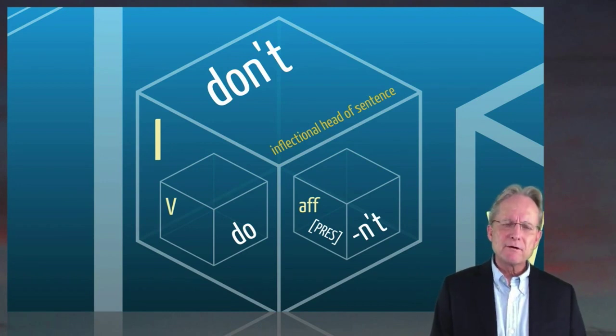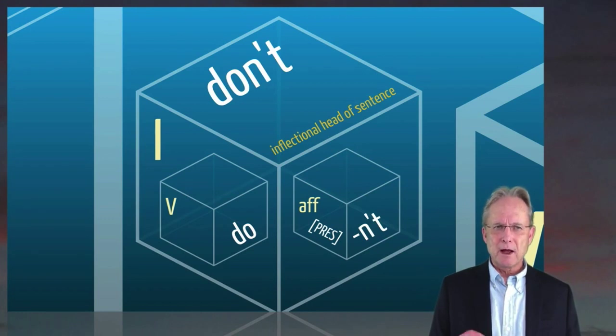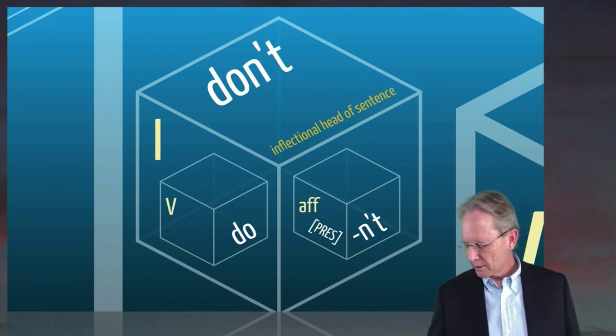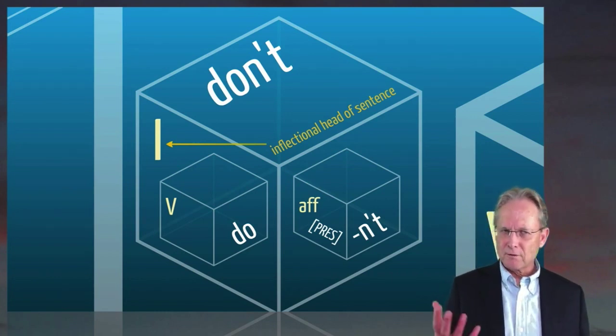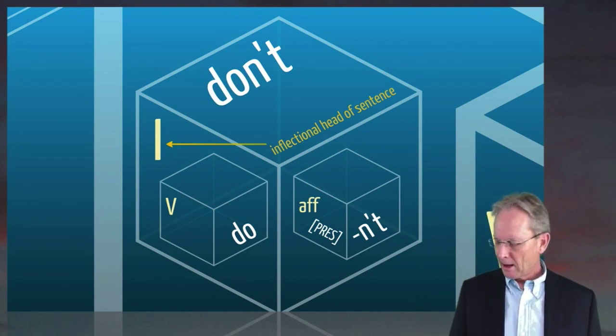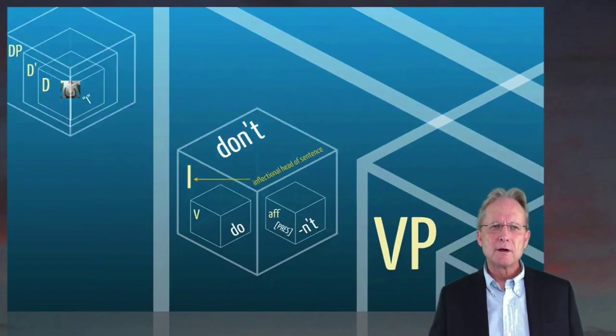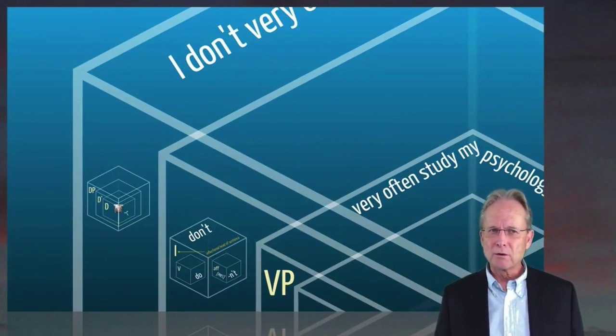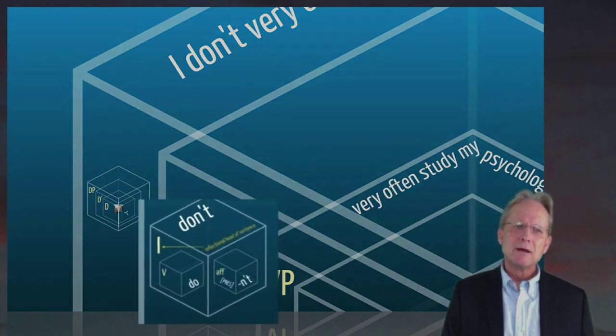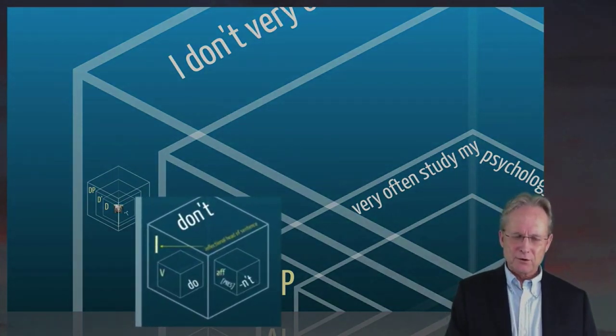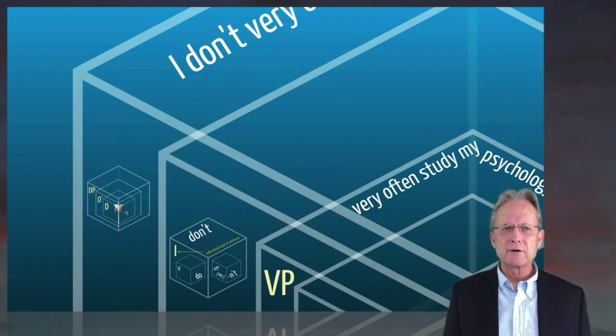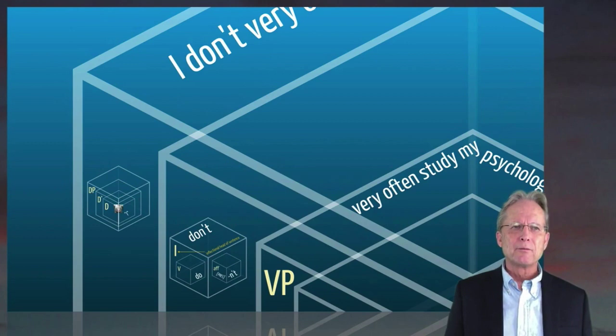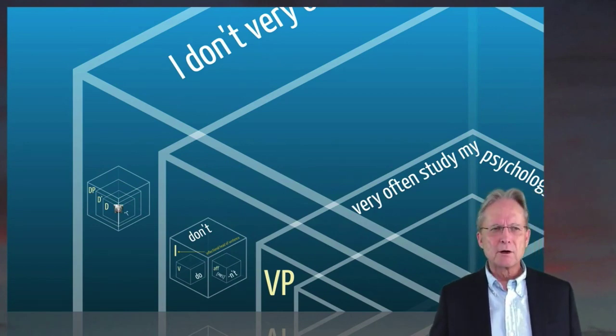So we've got at the base of every sentence we have an inflectional head. A part that counts as the head of the whole sentence and we give that the label I to stand for short for inflection. And the inflection is at some level the head of the whole sentence. When there's an auxiliary verb, then that inflection shows up as part of some kind of morphological manifestation of that on the auxiliary verb.